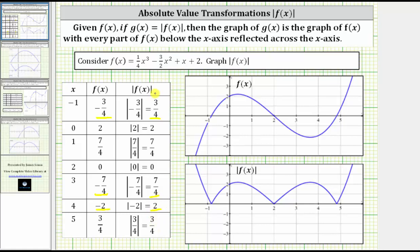Graphically, this means if we want to graph the absolute value of f of x, we need to reflect the parts of the graph of f of x where f of x is negative across the x-axis. Let's first highlight the parts of the graph where f of x is negative — this would be where the graph is below the x-axis, which is this piece and this piece. So now, if we want to graph the absolute value of f of x, all these negative function values will be positive, which means these pieces of the graph are reflected across the x-axis.